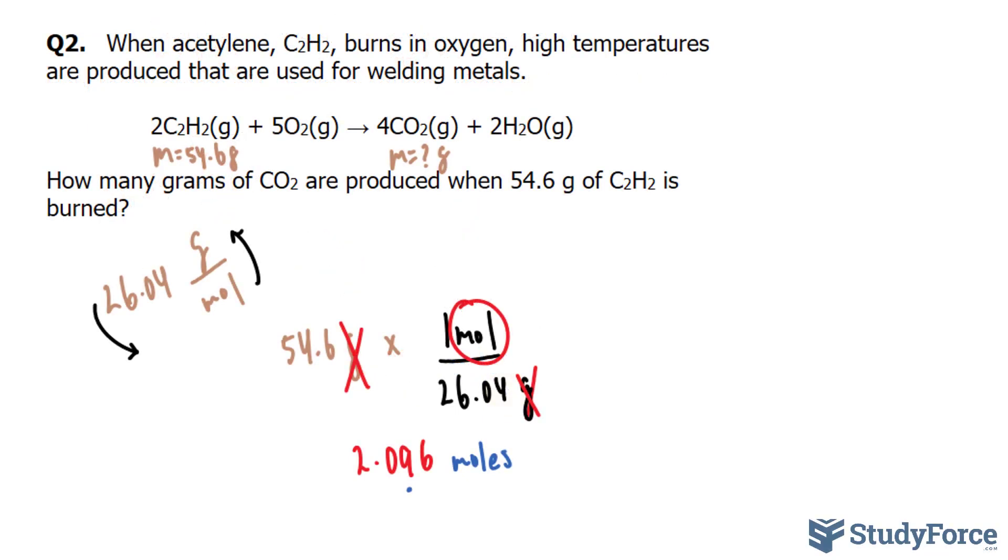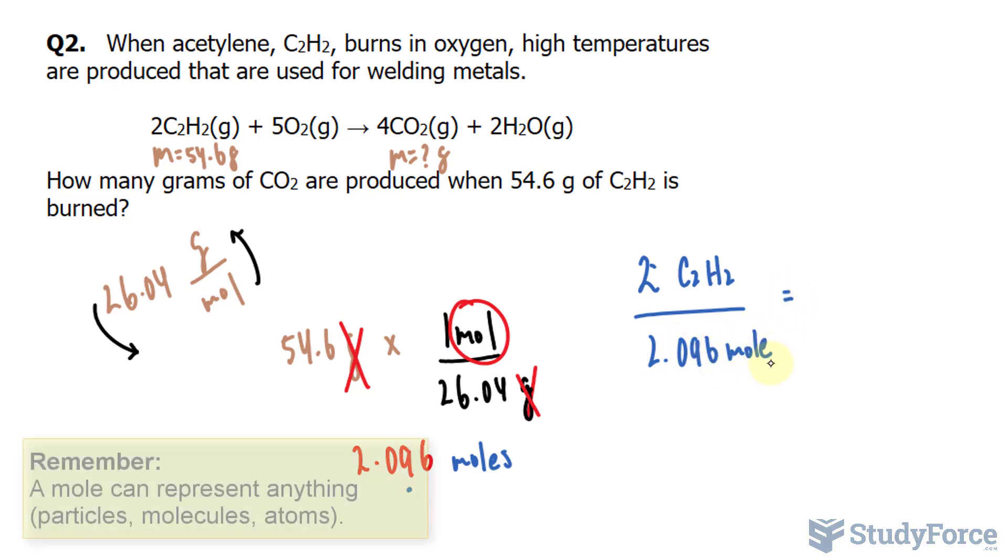Using the same technique that we learned in question number one, we'll set up a ratio. We have two molecules of C2H2 per every 2.096 moles of that. And we'll make this equal to four molecules of CO2, and we're looking for the amount of moles, which I'll represent as N.